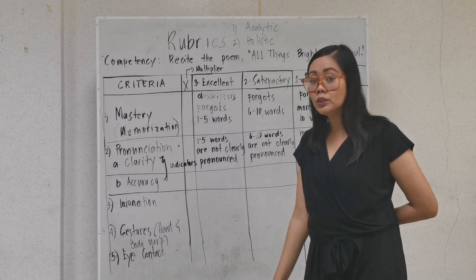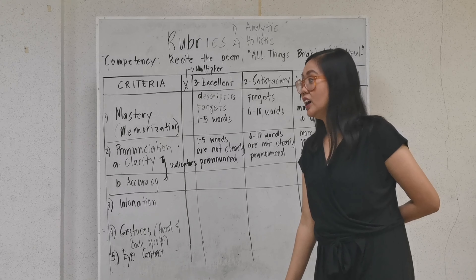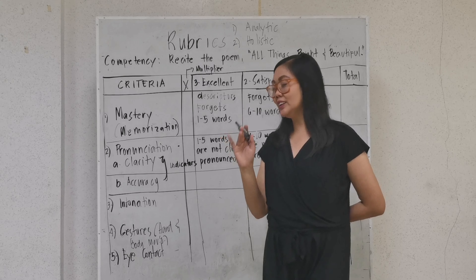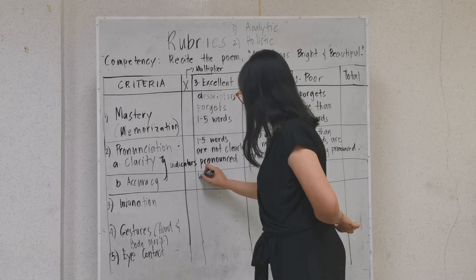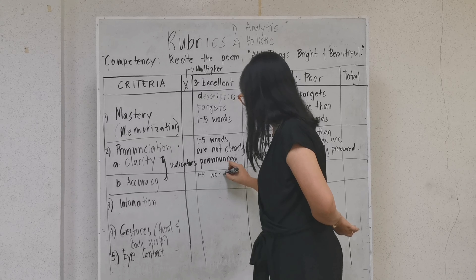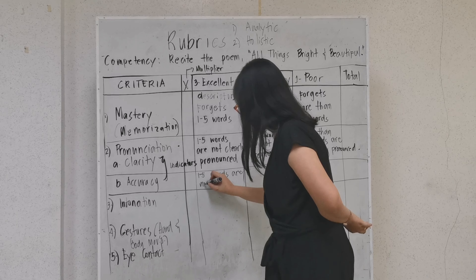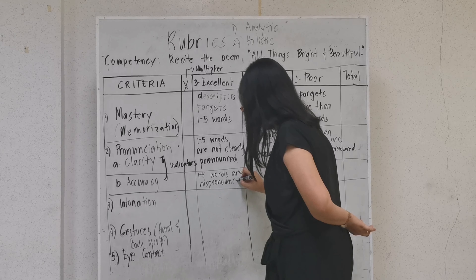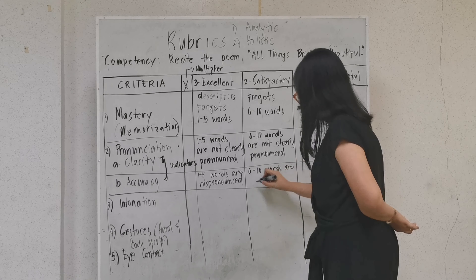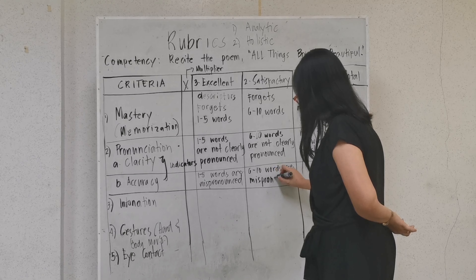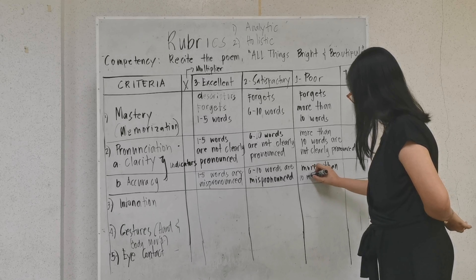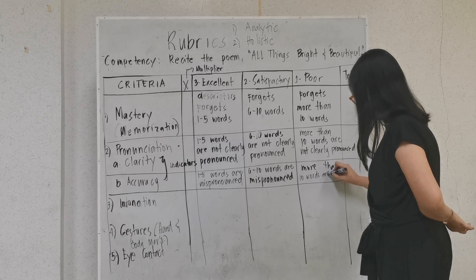For accuracy — whether words are correctly pronounced — you can also count mispronounced words. For excellent: '1 to 5 words are mispronounced.' For satisfactory: '6 to 10 words are mispronounced.' For the lowest level: 'more than 10 words are mispronounced.'